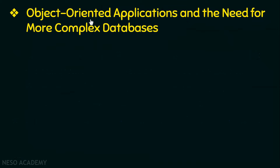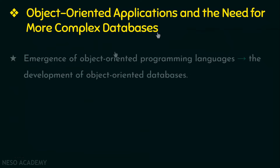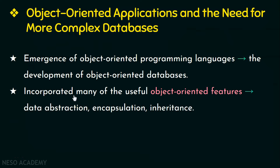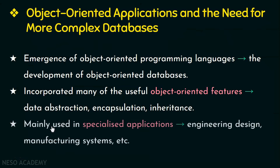Next, let us look into object-oriented applications and the need for more complex databases. The emergence of object-oriented programming languages led to the development of object-oriented databases. These databases incorporated many features of object-oriented programming languages like data abstraction, encapsulation, and inheritance. The use of this model was limited because of its complexity, and they are mainly used in specialized applications only, like engineering design and manufacturing systems.